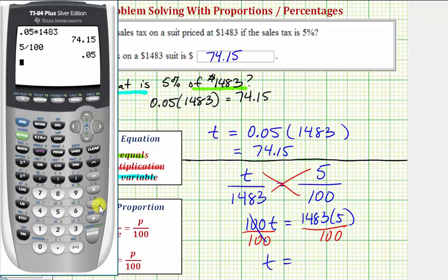We'll put this numerator in parentheses. So in parentheses we have 1,483 times five, close parenthesis, divided by 100, which does give us 74.15, the same sales tax.